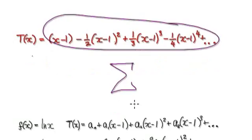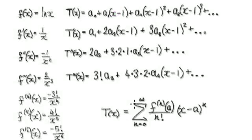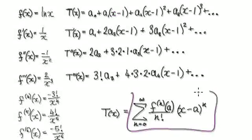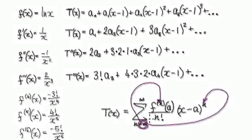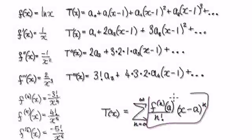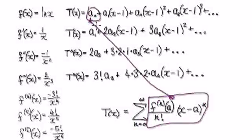We've seen this in the past. If you can memorize this formula: when n equals 0, you put 0 into each position, and this whole thing represents your first term, a sub 0.